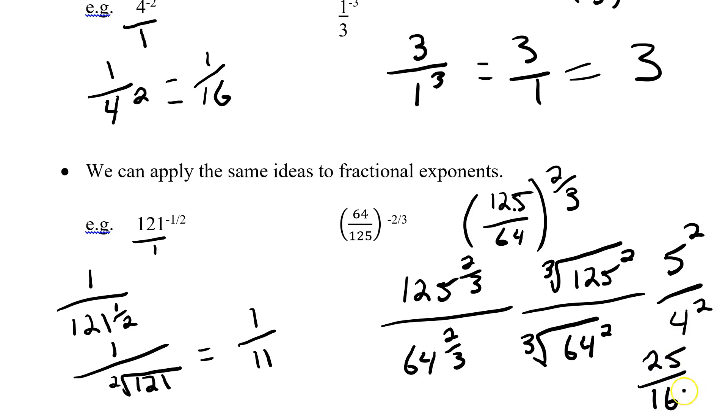So I got it as a fraction. Can this fraction be reduced? Divided by 2? No. 3? No. 4? No. 5? 6? Can't be reduced. So I got an answer of 25 over 16. So 64 over 125 to the power of negative 2 thirds can simplify to 25 over 16.